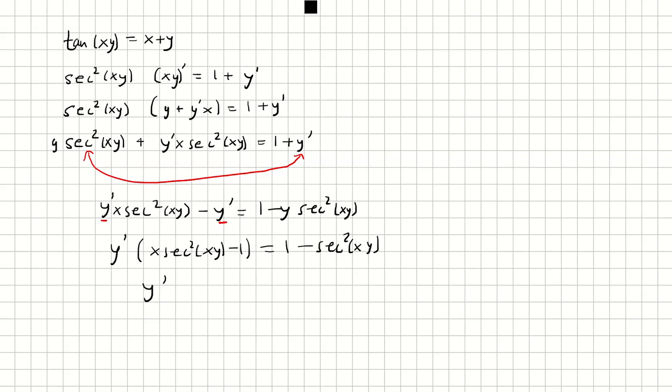I'm going to divide both sides by x secant squared xy minus 1, and end up with y prime equals 1 minus secant squared xy over x secant squared xy minus 1. That is my final answer.